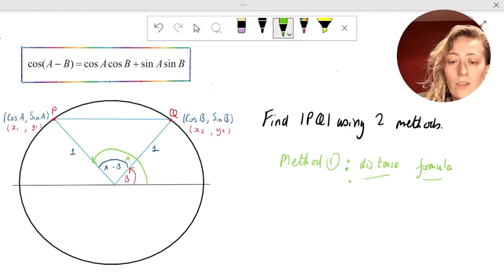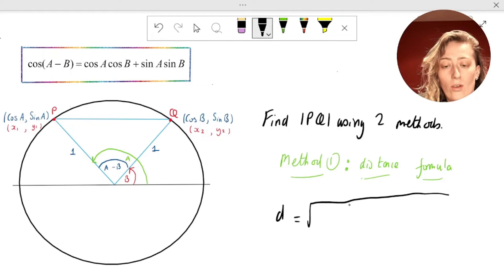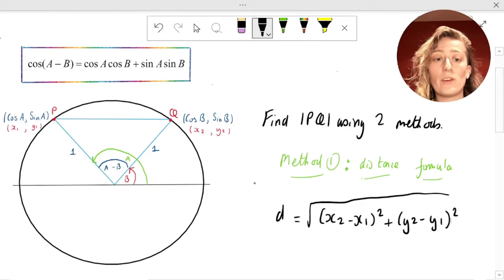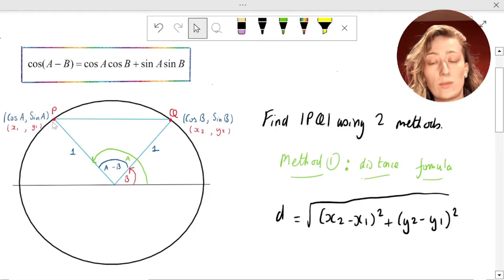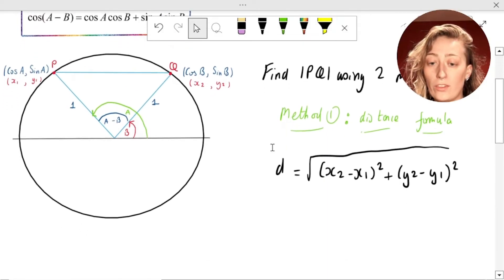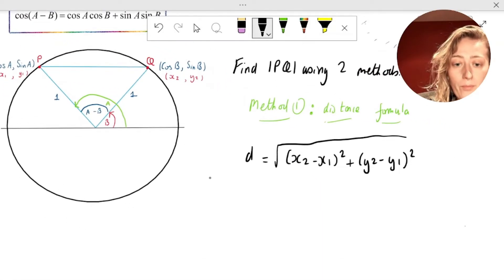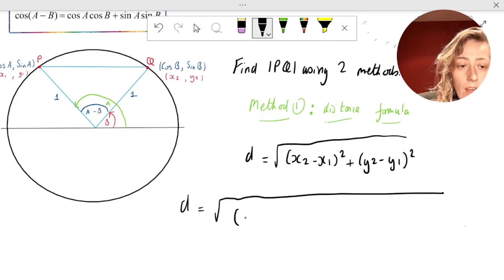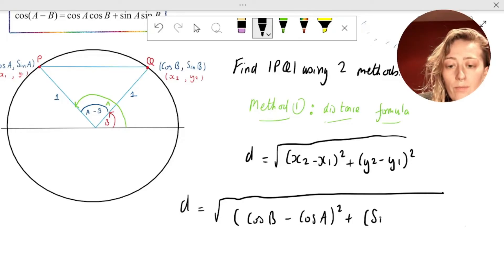As a little reminder, the distance formula is the distance between two points in a plane is given by D is equal to the square root of x2 minus x1 all squared plus y2 minus y1 all squared. Now we already have labeled those things in our construction, which is nice. So we have the cos A, sine A is x1, y1, and cos B, sine B is x2, y2. So we should sub it in. Let's do that much. So that means that D is equal to the square root of x2 we set as cos B minus x1, which is cos A, all squared, plus y2, which is sin B, minus y1, which is sin A, all squared.